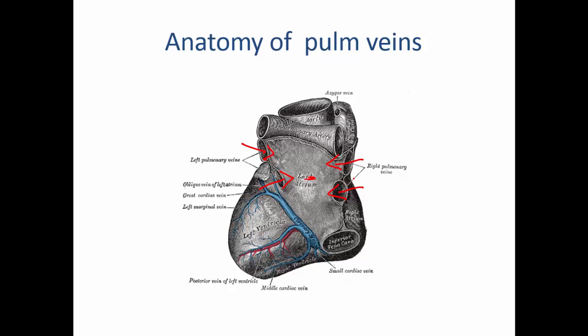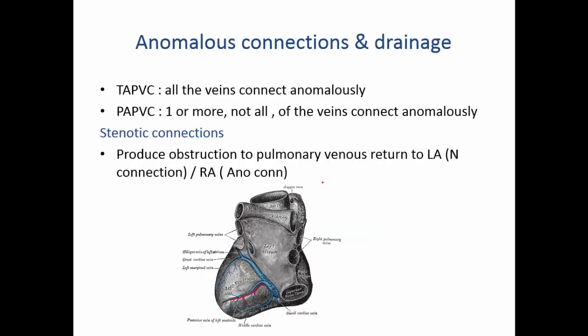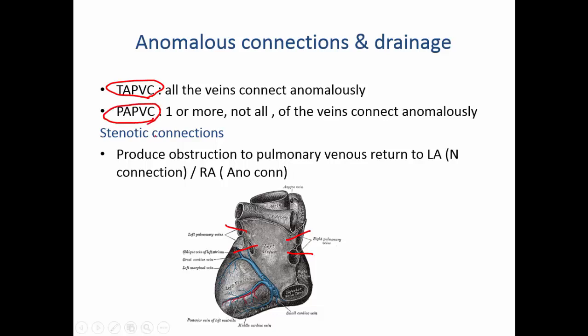If anything is wrong and these pulmonary veins are not draining into the left atria, we get an anomalous pulmonary venous drainage or connection. If none of the four veins are coming into the left atria, you get total anomalous pulmonary venous connection — TAPVC, or TAPVR where R stands for return. If two come in normally and two drain elsewhere, that gives rise to partial anomalous pulmonary venous connection.